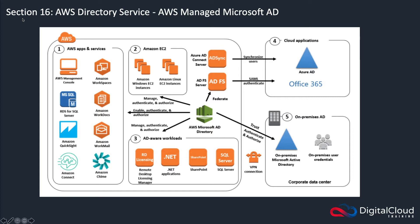Looking at this AWS diagram, it articulates a bit about the AWS Microsoft Active Directory — a managed Microsoft Active Directory within the AWS cloud. One of the things you can set up is called a trust relationship. What this means is you set up a trust relationship between two Active Directories, which enables users in one Active Directory to access resources in another Active Directory.